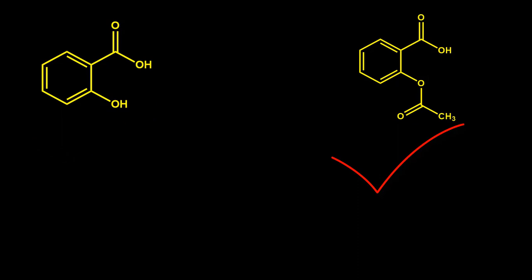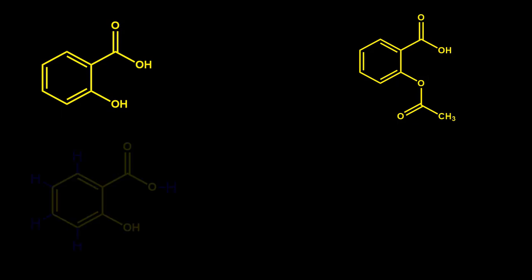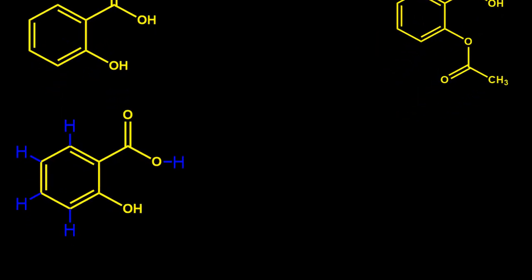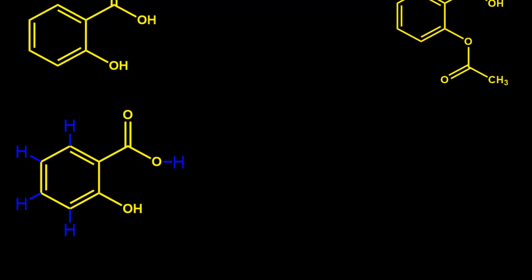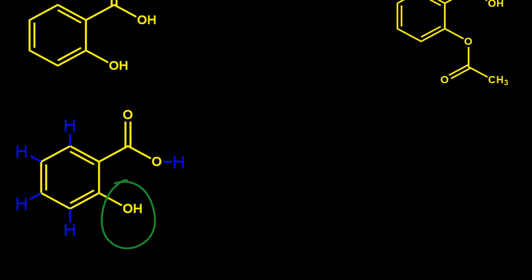What we're looking for in the NMR are protons — hydrogens. If we look at salicylic acid, the protons on the ring are what we call aromatic protons. Those aromatic protons are going to show up in a specific region, somewhere between about seven and about eight and a half parts per million. Then you have your carboxylic acid proton, and the OH proton — sometimes depending on the resolution of your instrument you can see it, sometimes you can't.